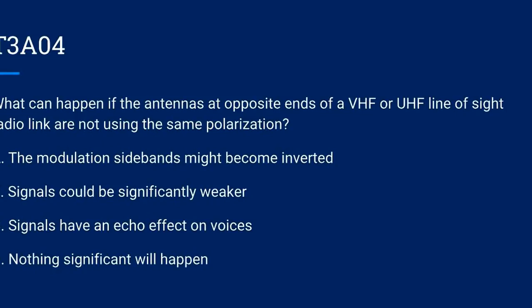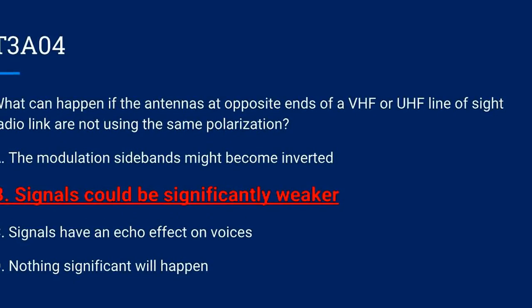T3A04. What can happen if the antennas at opposite ends of a VHF or UHF line-of-sight radio link are not using the same polarization? A. The modulation sidebands might become inverted. B. Signals could be significantly weaker. C. Signals have an echo effect on voices. Or D. Nothing significant will happen. Correct answer is B: signals could be significantly weaker.